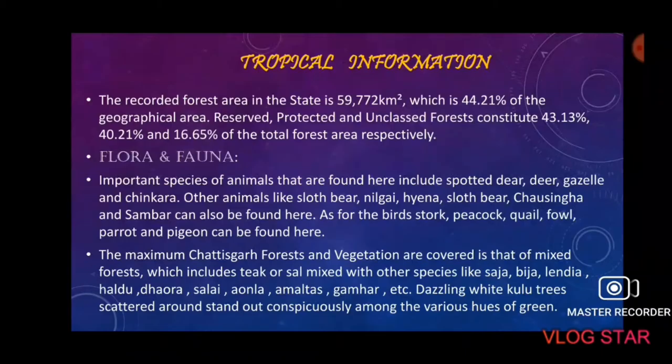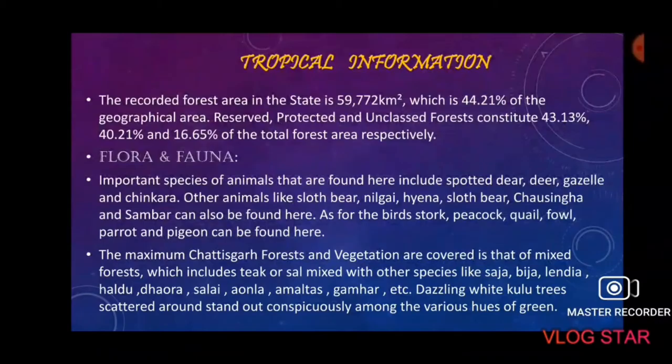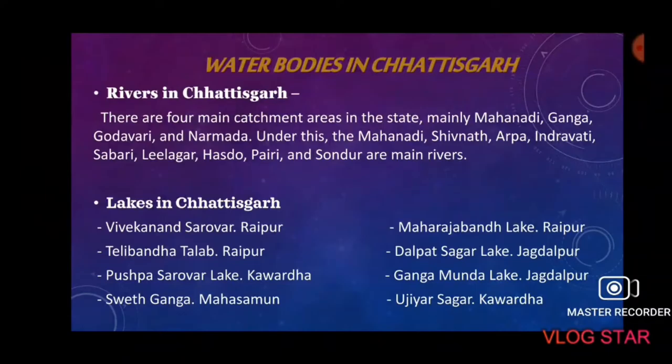Flora and fauna of Chhattisgarh: Important animal species include spotted deer, gazelle, and chinkara. Other animals like sloth bear, nilgai, hyena, chowsingha, and sambar can also be found here. Birds such as stork, peacock, quail, fowl, parrot, and pigeon are present. The maximum forest vegetation consists of mixed forests including teak, along with other species like saja, bija, lendia, harra, dhaura, salai, amla, gambhari, etc. Dazzling white kullu trees scattered around stand out among the greenery, giving Chhattisgarh a very green and fresh climate.